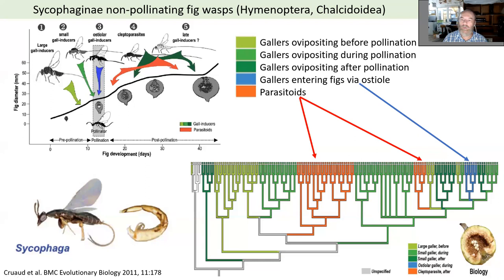As I said, there is always an exception in ficus to everything. There is actually one lineage of gallers that is able to enter via the ostiolе, exactly as pollinating fig wasps do.